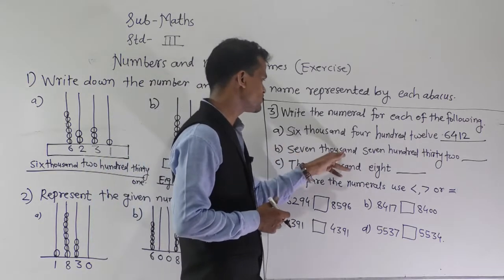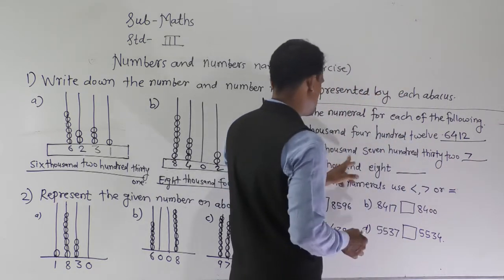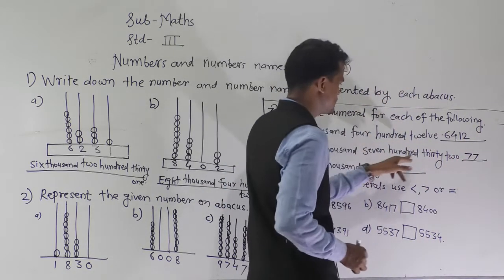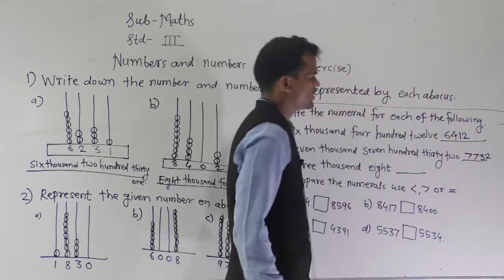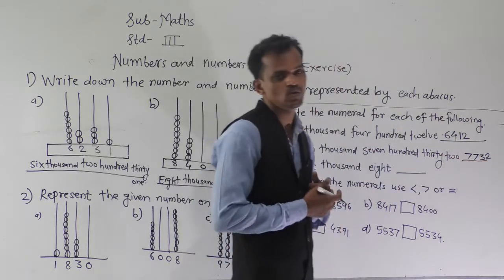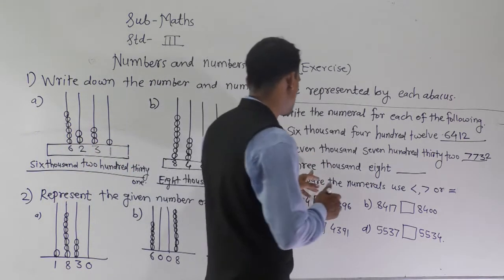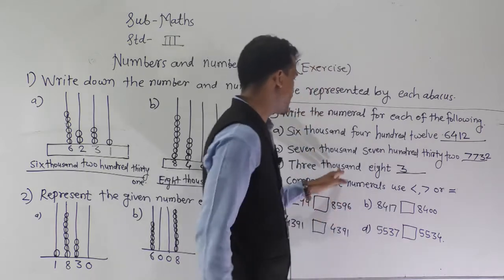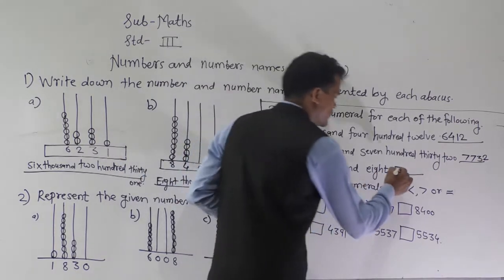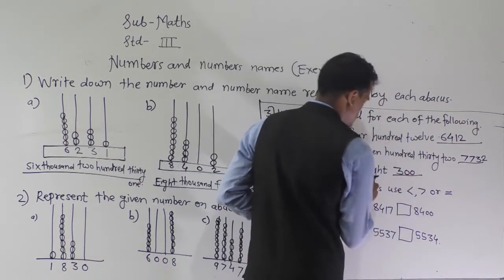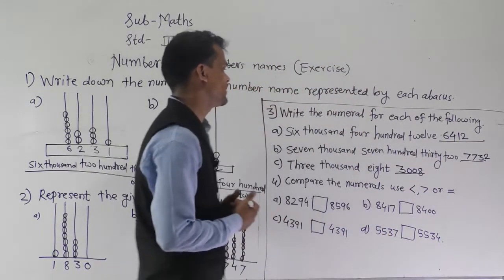Next, 7732: write 7 at the thousands place, 7 at the hundreds place, 3 at the tens place, and 2 at the ones place — so 7732 is written. Then 3008: write 3 at the thousands place; the hundreds place digit and tens place digit are not given, so write zero at both places, and write 8 at the ones place — so 3008 is written.